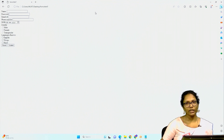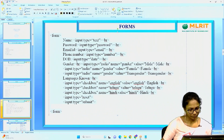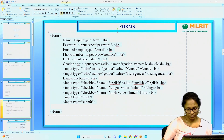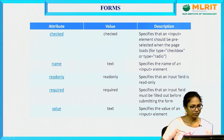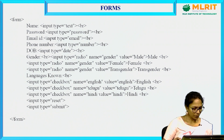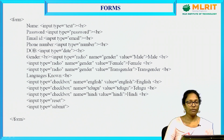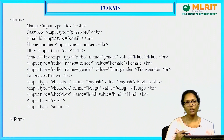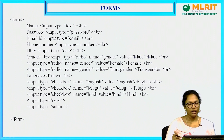Whenever you create a radio button, you need to give a common group name for all the radio buttons. Now, in the previous program, we did not get any proper output because we are not redirecting this application anywhere. For example, if I want to get a proper message after submitting all details, then I need to add the action attribute with the form tag.